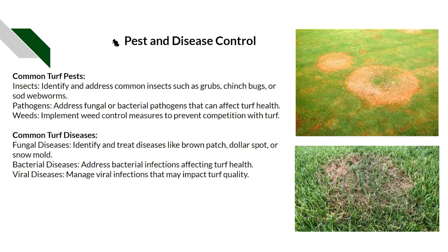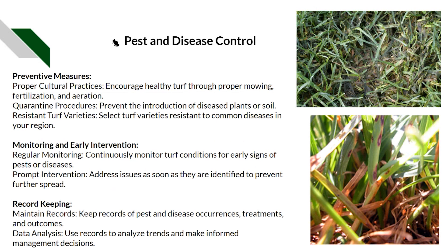Knowing the common turf pests and diseases helps us identify issues quickly — otherwise we can use search engines to figure out what we're dealing with. Common turf diseases include fungal and bacterial diseases, and occasional deficiencies. For example, if we see red thread in the bottom right, getting some nitrogen on at the right time and watering it in may be enough to grow it out. Preventative measures include applying fertilizer in advance if we know a disease like red thread typically occurs at a certain time each year.